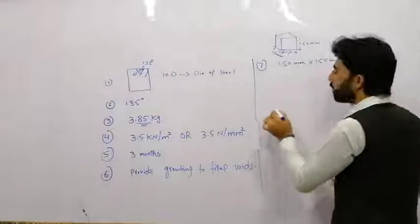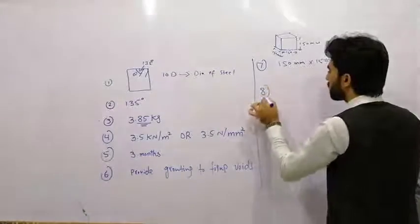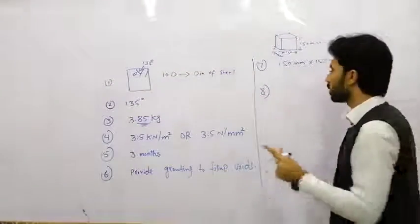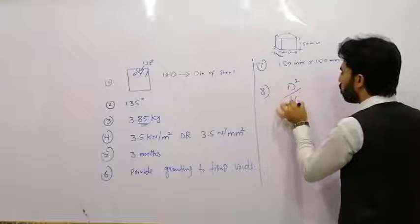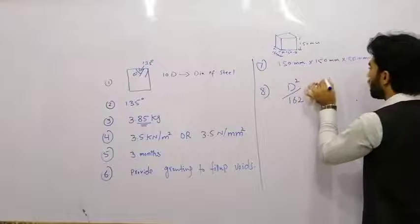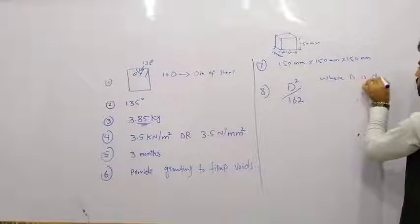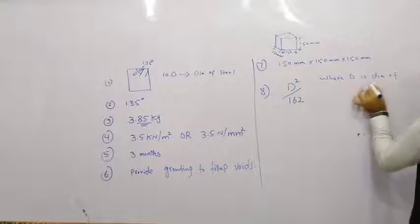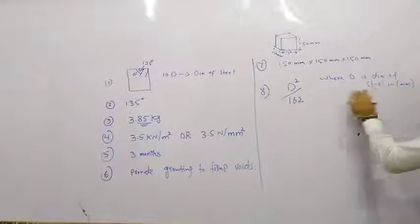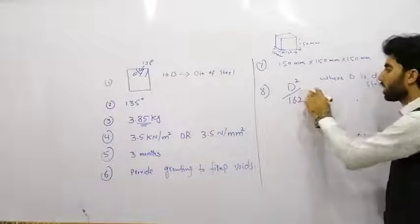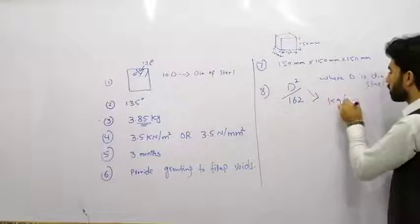The eighth question is: how to find the unit weight of steel in kg per meter? Use the formula d squared divided by 162, where d is the diameter of the steel in millimeters. Remember the diameter must be in millimeters for this formula to give weight in kg per meter.